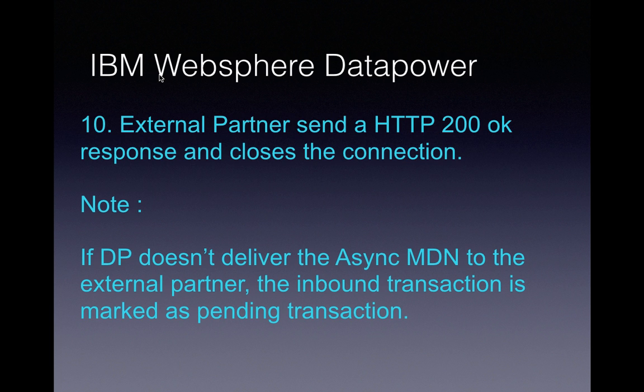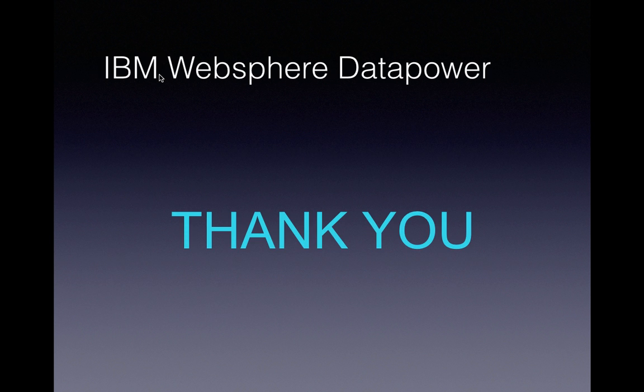The external partner receives the MDN. After the external partner receives the MDN, it sends back a 200 OK response to DataPower and closes the connection. In case DataPower doesn't deliver the asynchronous MDN to the external partner, the inbound transaction in DataPower will be marked as pending. That's all for this video. We will see how asynchronous outbound flow for a B2B service gateway works. Thanks for watching.